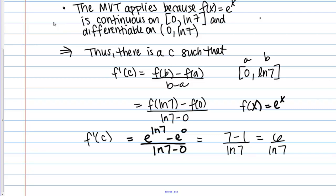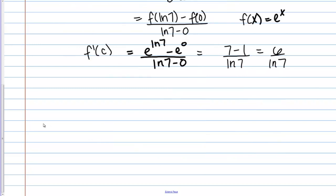So I'm looking for the point where the derivative equals 6 over the natural log of 7. Well to continue I actually need to know what the derivative of my function is. I haven't yet calculated that derivative. So if F of X equals E to the X, then what's F prime of X? Well the derivative of E to the X is just E to the X. So the derivative is E to the X.